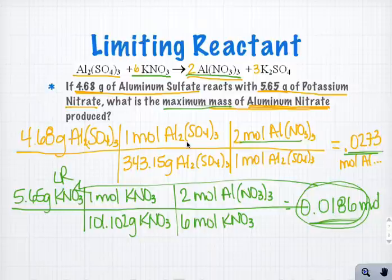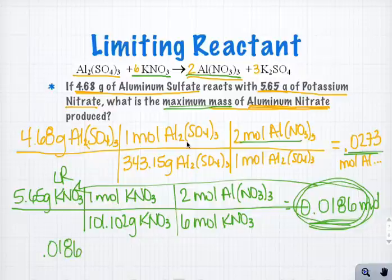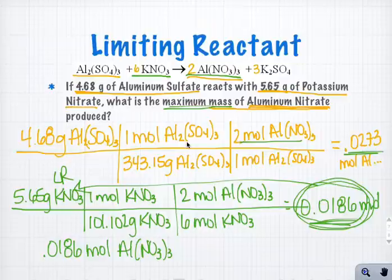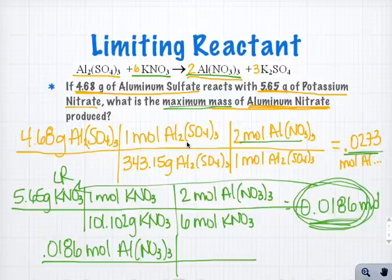Well, the question said, what's the maximum mass? So now I'm going to take these moles and I'm going to convert those moles into grams. So if I have 0.0186 moles of aluminum nitrate, to convert that into grams,